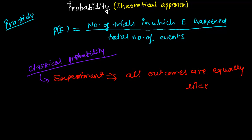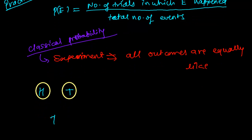Suppose this is the head part of the coin and this is the tail part of the coin. When I toss this coin freely, the possibility of getting head and getting tail are equal. Every time I may get head or I may get tail — both have equally likely outcomes. Getting head is exactly equal to getting tail.